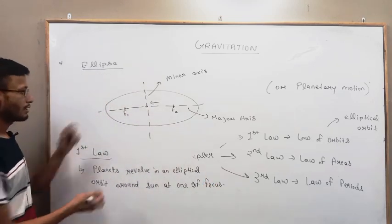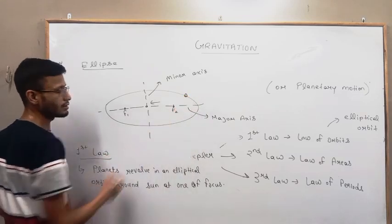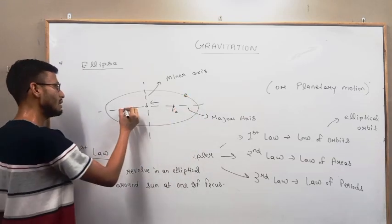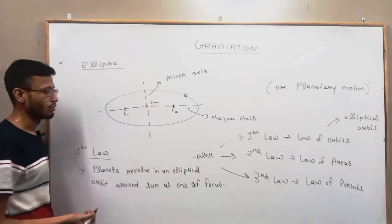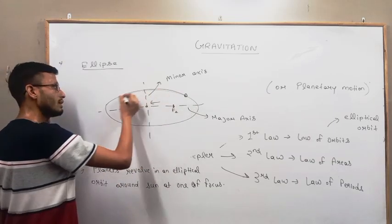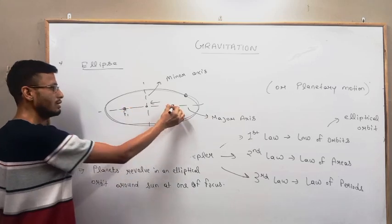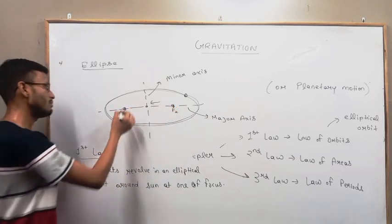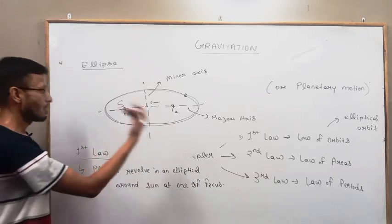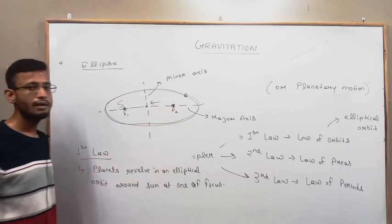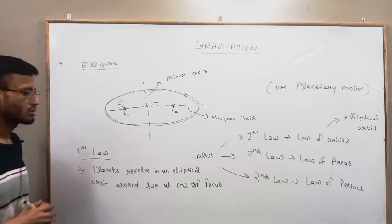That is, planets revolve - suppose this is a planet - with the sun which may be at f1 or may be at f2. Then planets revolve in this orbit with the sun being at one of the focus. It might be at f1 for some planet, or it might be at f2 for another planet. So that's all about the first law.